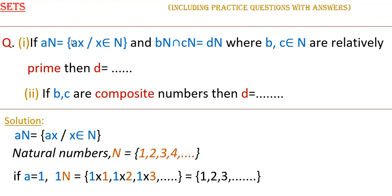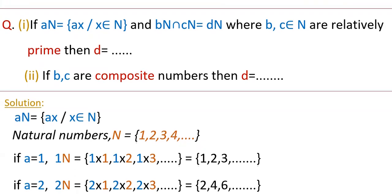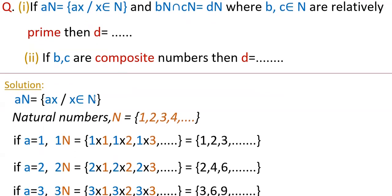So here An is in this form: {ax | x ∈ N}. And Bn ∩ Cn = Dn, where B and C are natural numbers. In the first case, B and C are prime numbers — what is D? In the second case, if B and C are composite numbers, what is D? Here N means the natural numbers: 1, 2, 3, 4, etc.